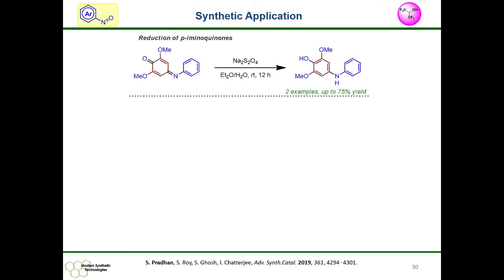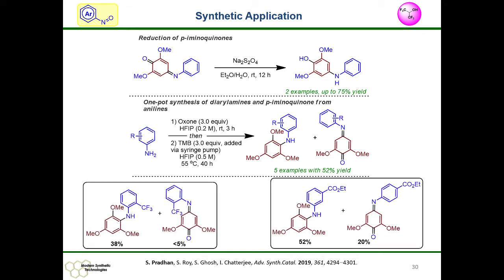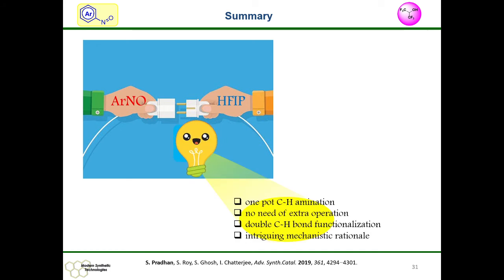For synthetic applications, we carried out reduction of the para-aminoquinone to form para-amino-naphthol derivatives, para-amino-phenol derivatives, and also a one-pot synthesis of diaryl amines and para-aminoquinones from aniline. In summary, nitrosarene and HFIP can simultaneously work for one-pot C-H amination, double C-H functionalization, and mechanistic rationale for this transformation is provided.